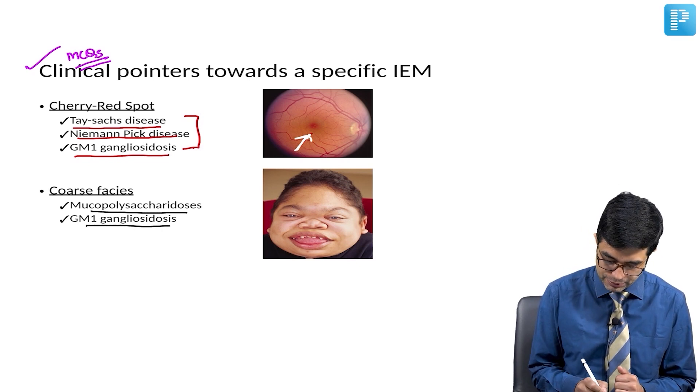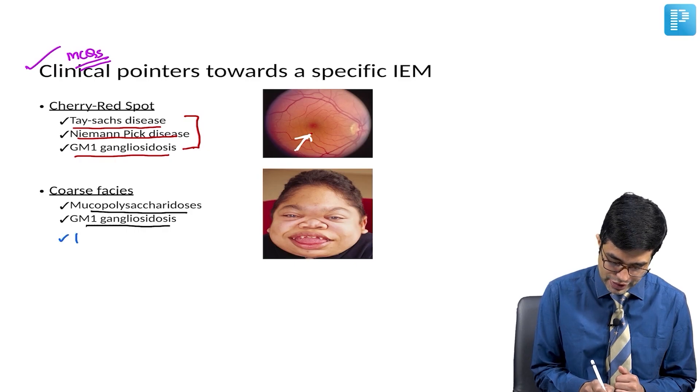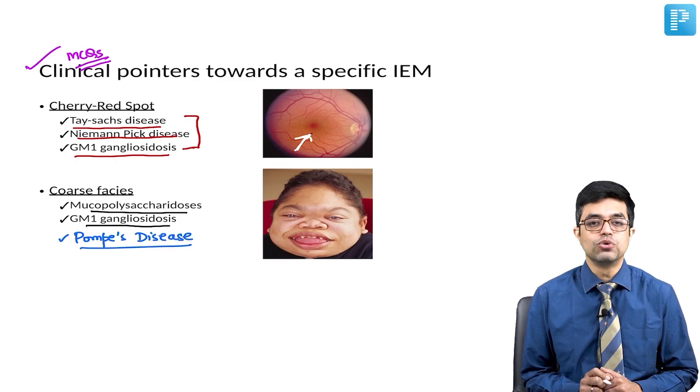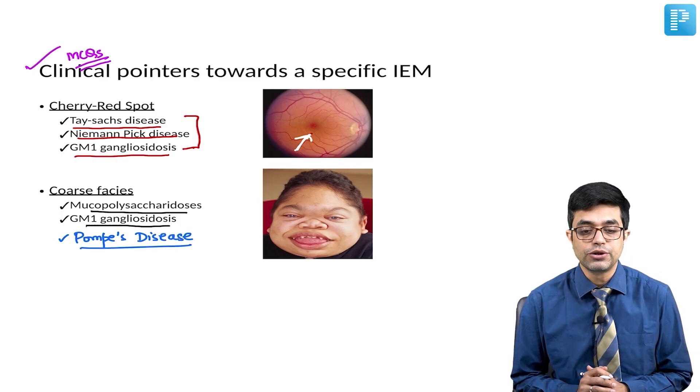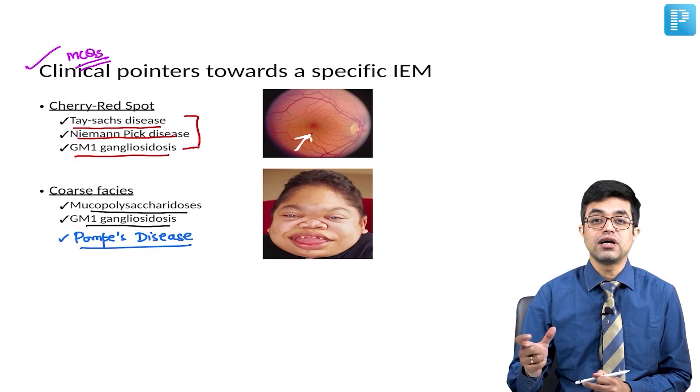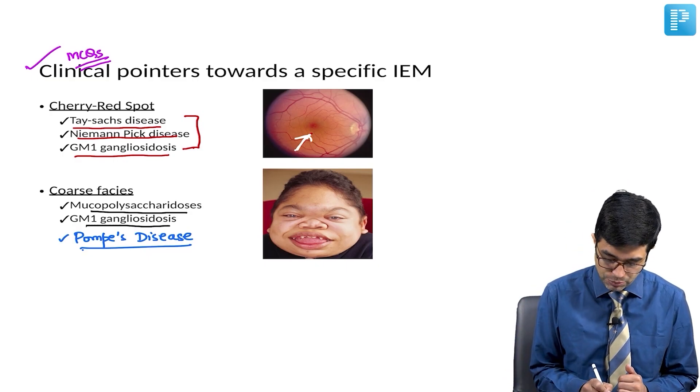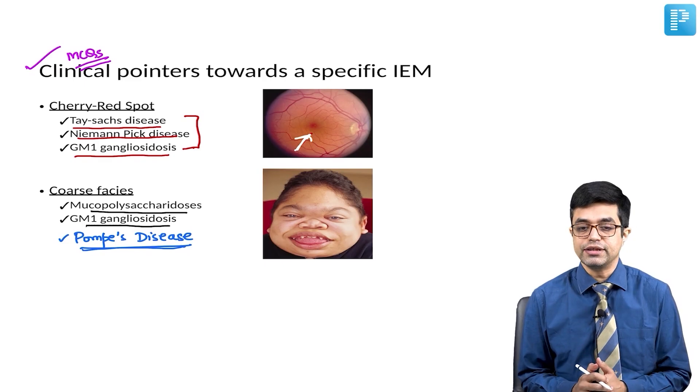In addition, you can remember that condition known as Pompe's disease, which is nothing but glycogen storage disease type 2, can also have coarse facies. So if an MCQ asks you what is the glycogen storage disease which shows coarse facies, the answer will be Pompe's disease, that is type 2 GSD.